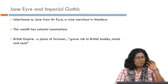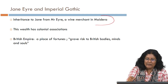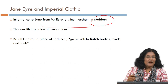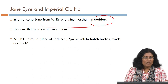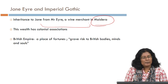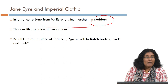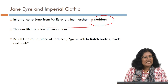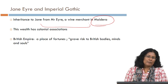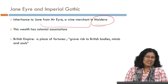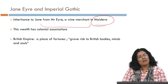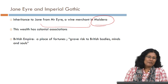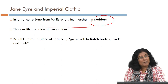The British Empire is understood as a place of fortunes, as seen in Madeira where Jane gets her inheritance — a place where people make money and rise in position. But it also poses a grave risk to British bodies, minds, and souls, producing spiritual and physical threat to British figures. It is perhaps a trade-off for the amount of money that is pumped into the country.